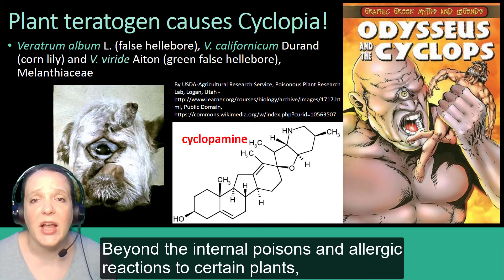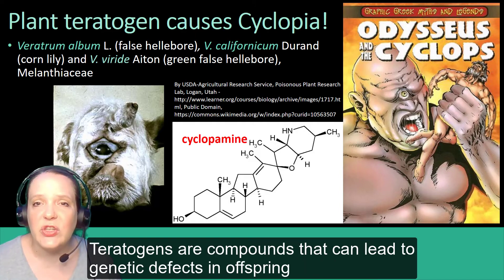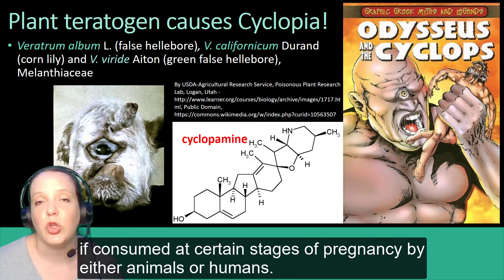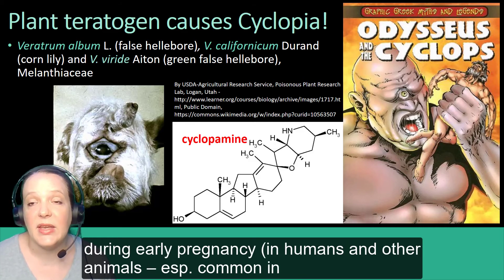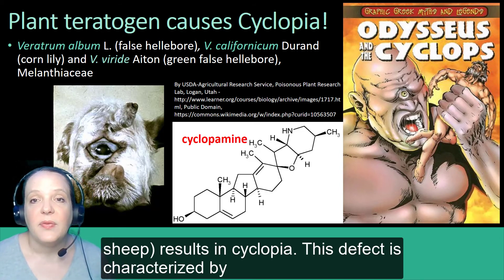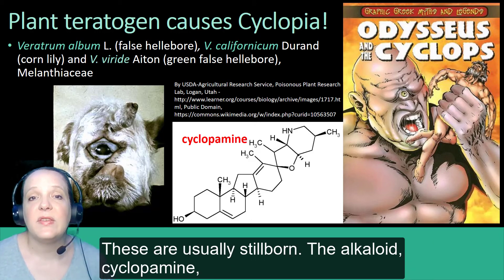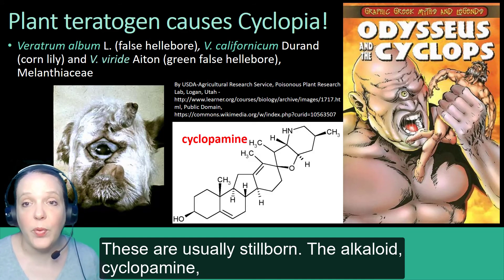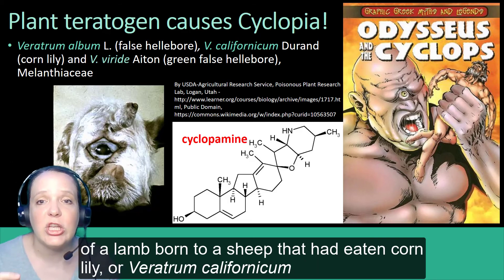Beyond internal poisons and allergic reactions, another group of injurious plants to consider are those with teratogenic potential. Teratogens are compounds that can lead to genetic defects in offspring if consumed at certain stages of pregnancy by either animals or humans. For example, consumption of the Veratrum genus in the Melanthiaceae family during early pregnancy — both in humans and other animals, especially common in sheep — can result in cyclopia. This defect is characterized by offspring born with a single eye, often blind, and sometimes missing a nose. These are usually stillborn. The alkaloid cyclopamine is responsible for these teratogenic effects. Here you can see an example of a lamb born to a sheep that had eaten corn lily, or Veratrum californicum, during the pregnancy.